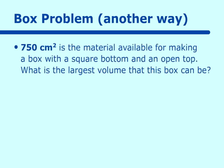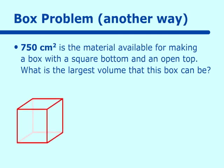Let's do another box problem, quite different from the last one. This one reads: 750 square centimeters is the material available for making a box with a square bottom and an open top. What is the largest volume that this box can be? Make a picture. The box has a square bottom with side x, and the height we'll call y. So the volume of our box is x squared times y. We will hold this equation until we find a substitution for either x squared or y, which comes from the 750.